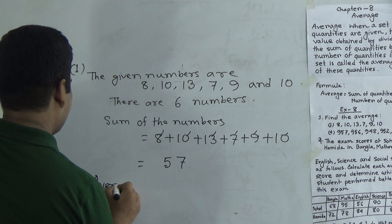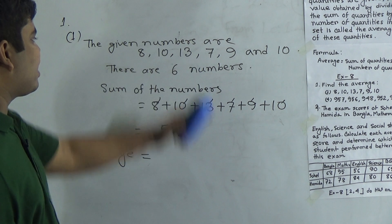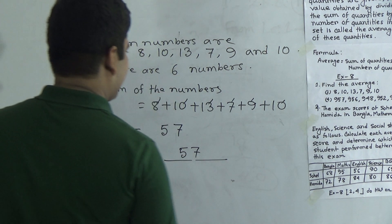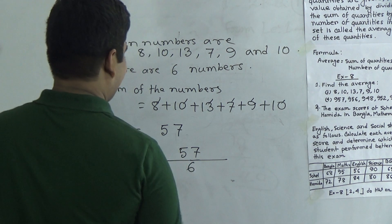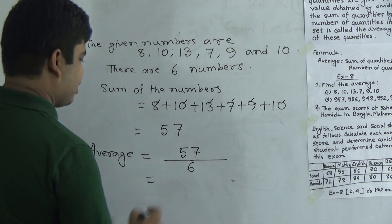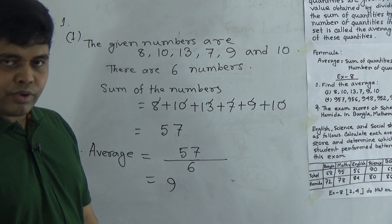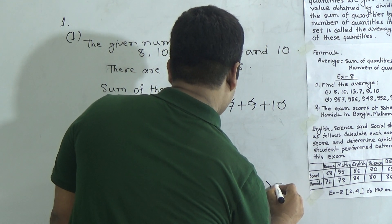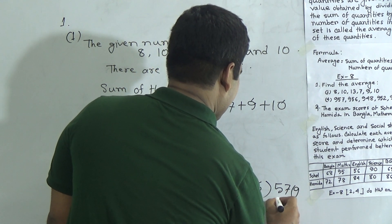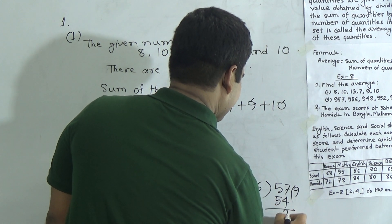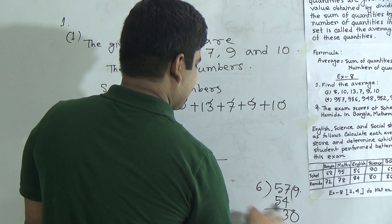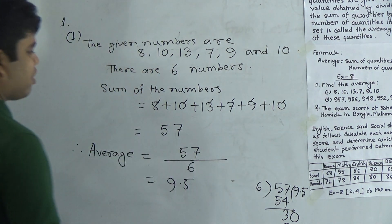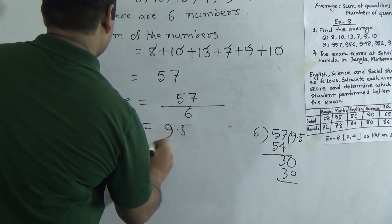Average equals sum of numbers divided by number of numbers. The sum is 57 and there are 6 numbers. So we divide 57 by 6. In 57, 6 goes 9 times: 6 nines are 54, remainder 3. Adding a decimal point and a zero, in 30, 6 goes 5 times: 6 fives are 30. So 9.5 is the average of these numbers. The answer is 9.5.